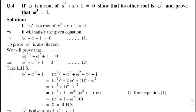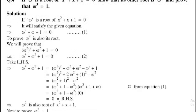So we have (omega² + 1 − omega) × (1 + omega + omega²). Since the sum of cube roots of unity equals zero, that is 1 + omega + omega² = 0, the expression becomes 0 × (omega² + 1 + omega) = 0. This implies that omega² is also a root of x² + x + 1.